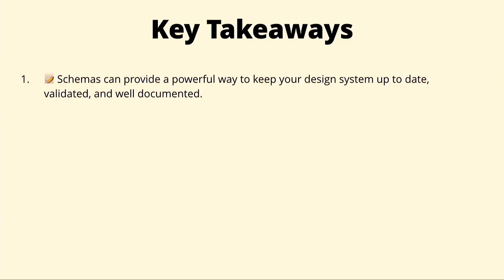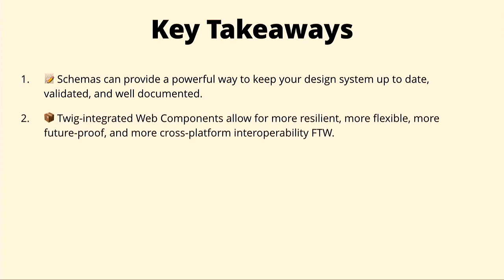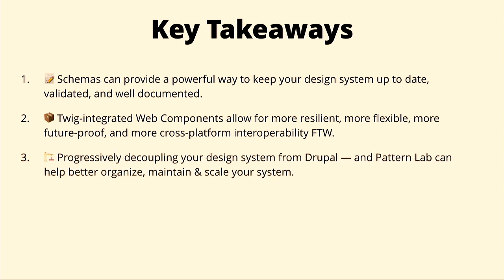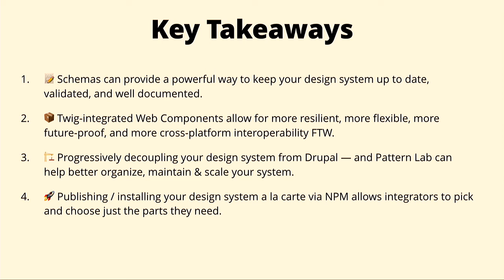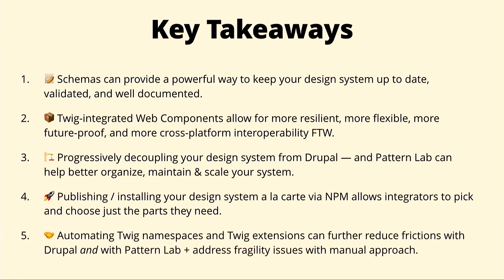I know we've covered a tremendous amount of material in a short time. We went through how schemas are a powerful but easy-to-read way to document your components, rules, options, and required fields. We talked about how Twig-enabled web components allow us to build more resilient, rugged components for cross-platform compatibility. We touched on progressively decoupling our system so Pattern Lab and Drupal are both wired up to our source of truth. We talked about publishing pieces to NPM so downstream consumers can pull in just the parts they want, and automating Twig namespaces and extensions to reduce friction between Drupal and Pattern Lab.